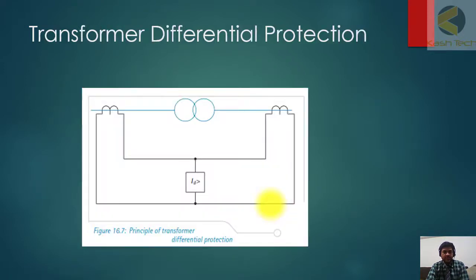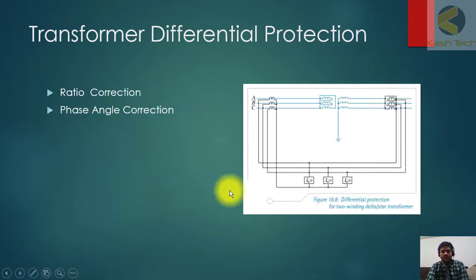For transformer differential protection, we can draw the diagram. This is the transformer symbol. Side one CT is connected, side two another CT is connected, and the differential current of both sides will be flowing through this relay.